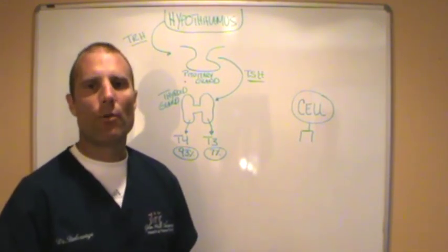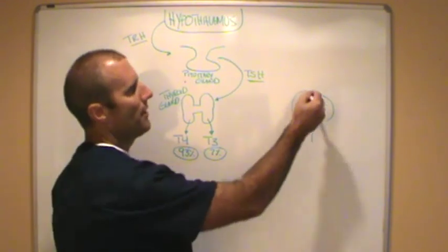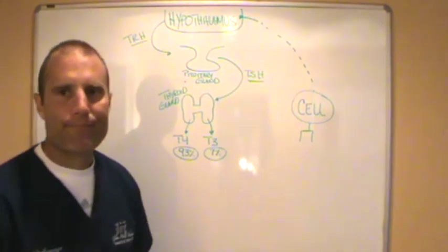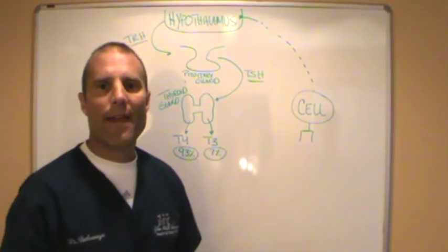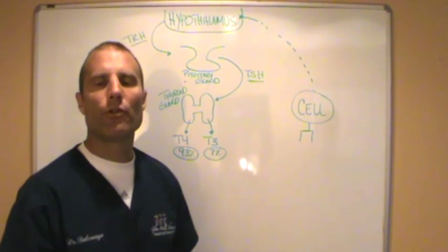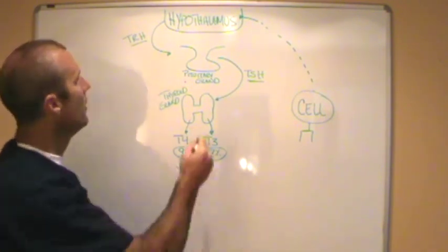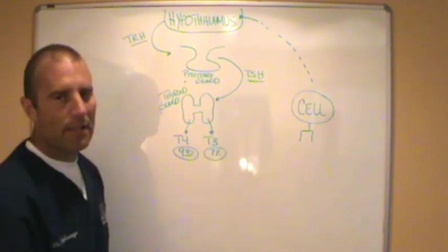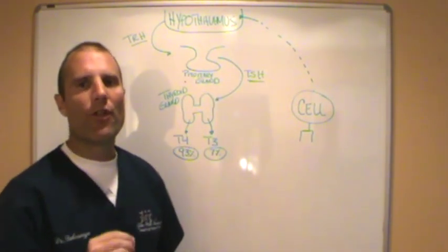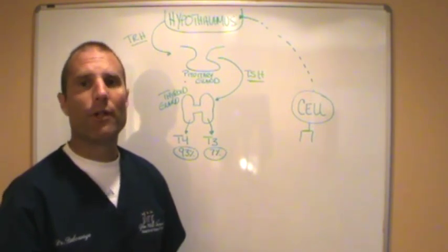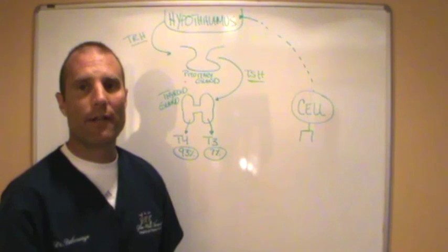When the cell runs low on thyroid hormone, the cells send a signal up to an area of the brain called the hypothalamus. The hypothalamus then sends signals via production of a hormone called thyroid-releasing hormone to a second gland within the brain called the pituitary gland. It's the pituitary gland that releases thyroid-stimulating hormone. If you've had any thyroid work done, you've probably had your TSH levels done. That's what that stands for, thyroid-stimulating hormone.